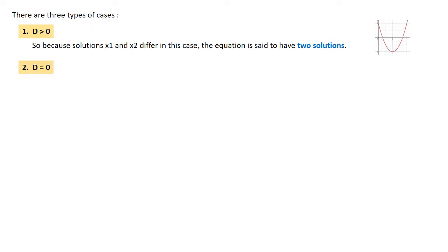Case 2: D = 0. When the solutions x1 and x2 are equivalent, the equation is said to have only one solution, actually two coinciding solutions.